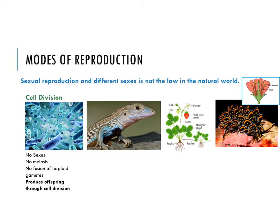We're going to go through four different examples of ways of reproducing asexually. The first is used very commonly in bacteria, one of the largest groups of organisms on this planet. Essentially they do cell division — they don't have any sexes, they don't go through meiosis, there's no fusion of haploid gametes — they produce offspring simply through cell division, or what we might call cloning.